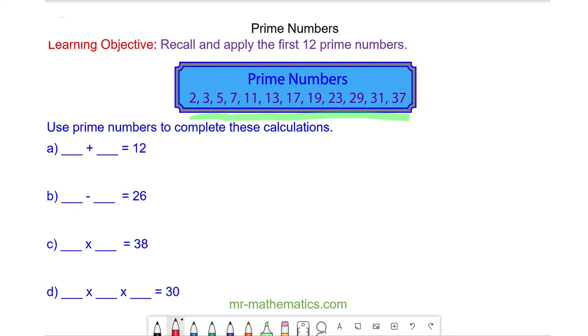For question a, we have 5 add 7. For question b, we can have 29 minus 3 or 31 minus 5. For question c, we can have 2 multiplied by 19. For question d, we can have 2 multiplied by 3, which is 6, multiplied by 5, which is 30, in any order.